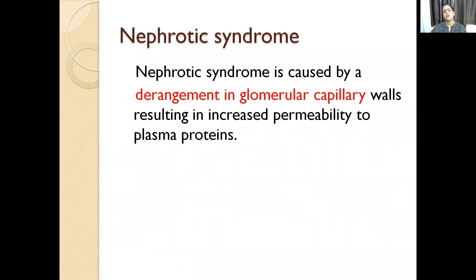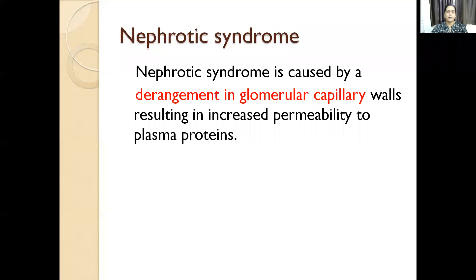Coming to the nephrotic syndrome: it is caused by derangement in glomerular capillary walls resulting in increased permeability to plasma proteins. This derangement is usually caused by cytokines. The glomerular basement membrane acts as a charge and size barrier — filtration occurs because of the charge-dependent barrier and the size-dependent barrier.